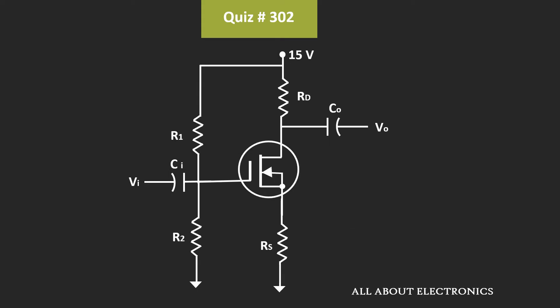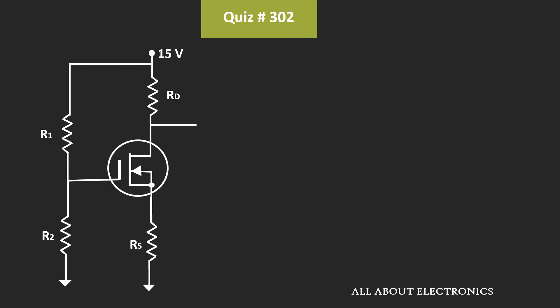The given circuit is the voltage divider biasing circuit. For the DC analysis, all the coupling capacitors will act as an open circuit. This MOSFET is the depletion type of MOSFET, and for the given MOSFET, we have been given the values of IDSS and VP. Here IDSS is equal to 9mA, while the pinch-off voltage VP is equal to minus 3V.